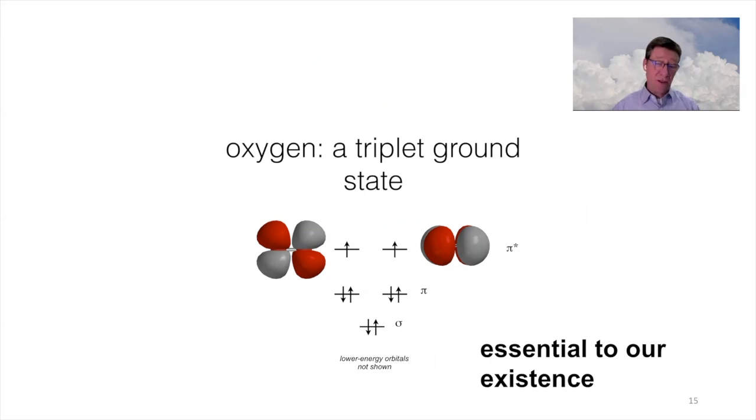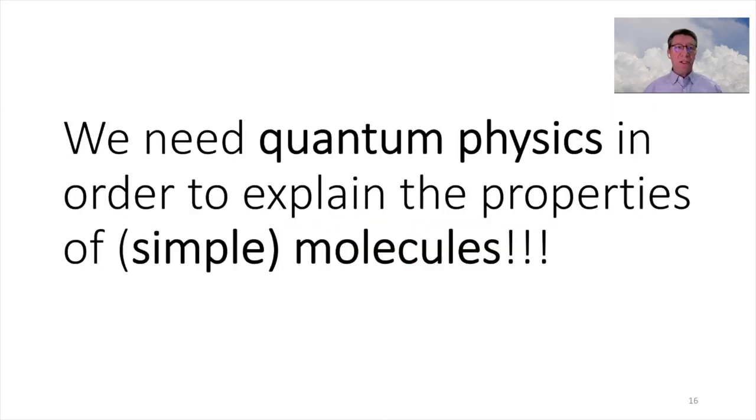It is essential for us. And here you see the orbitals. So basically, these electrons are in two orthogonal pi-star orbitals. Oxygen is a triplet ground state, and it is very important for our existence. We see that we need quantum physics to explain its properties.